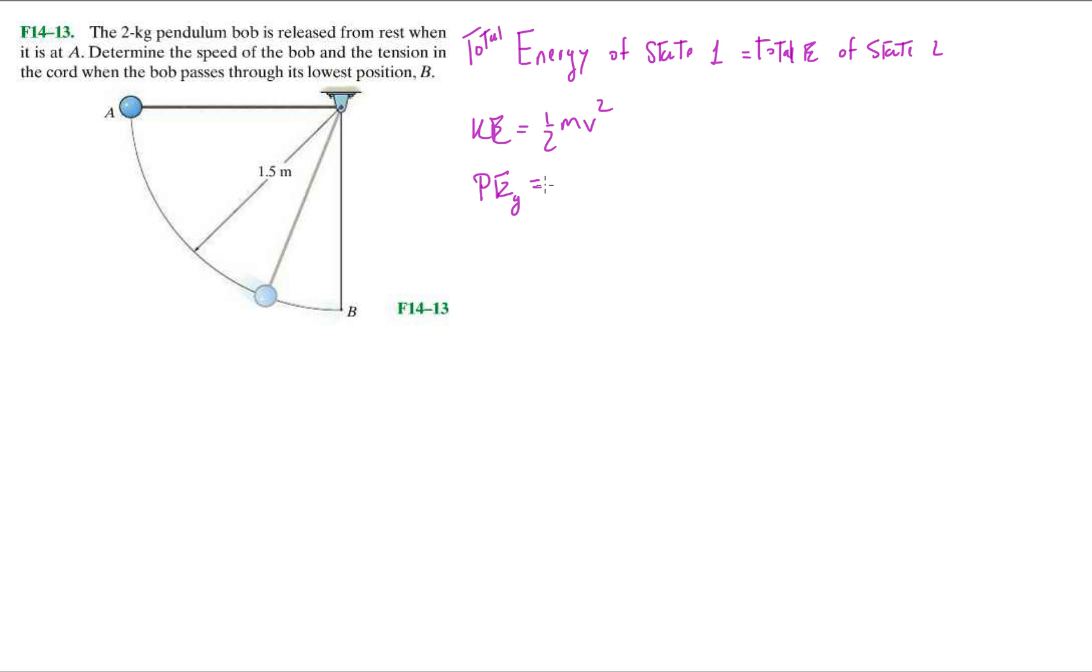We know that potential energy by gravity is just the weight times some change in height or your y position. We also know that potential energy by spring is one half k delta L squared.